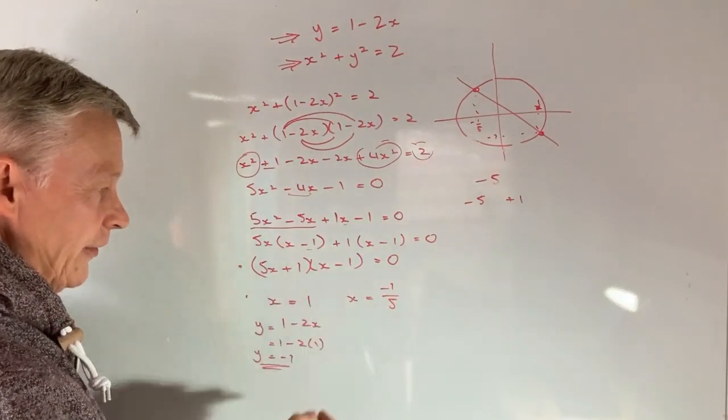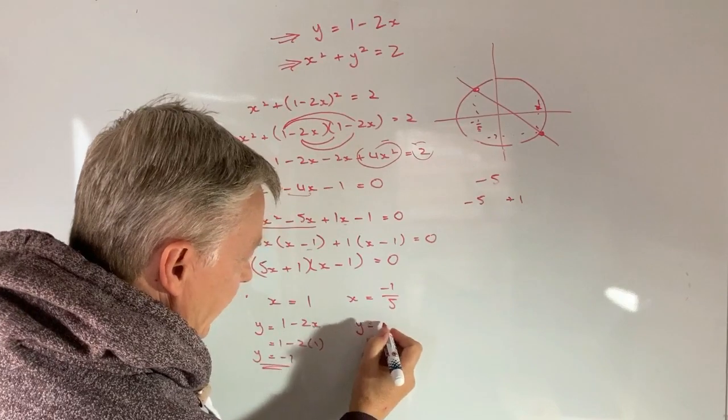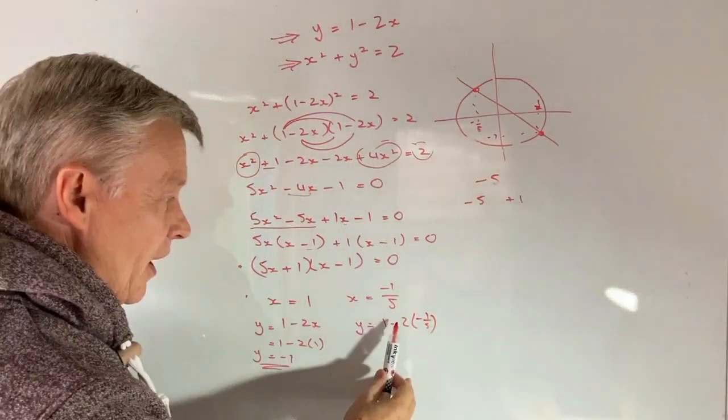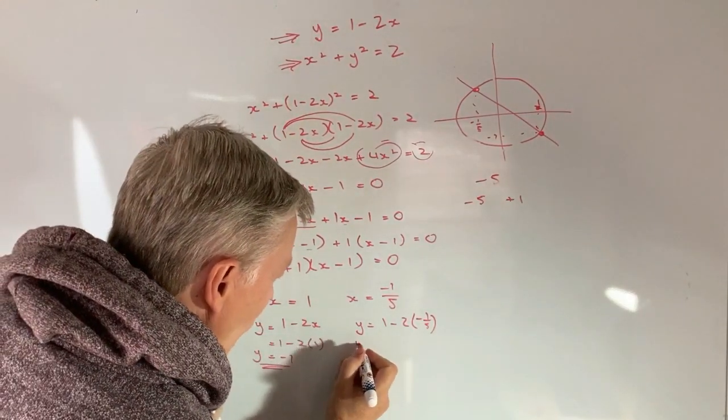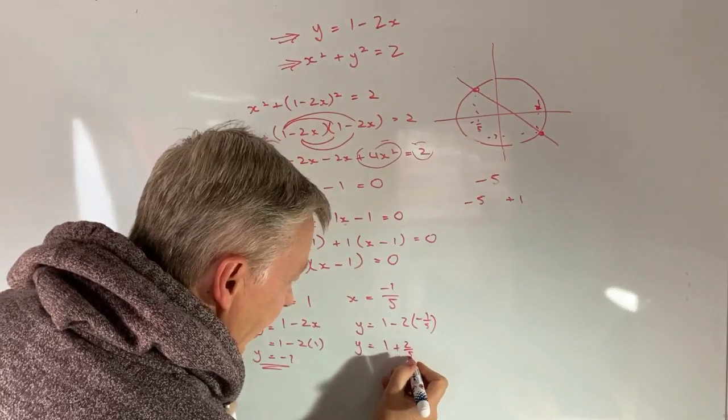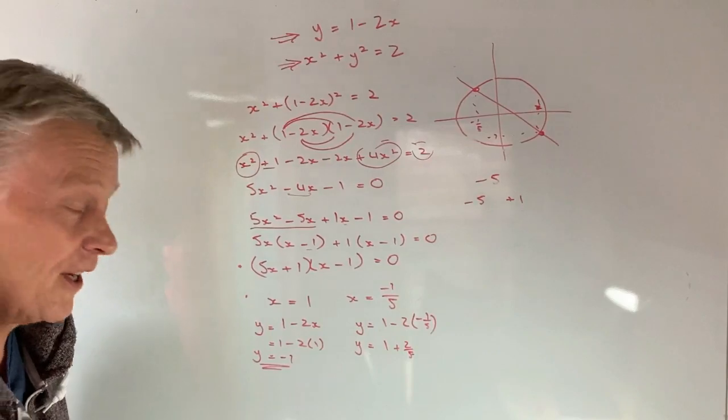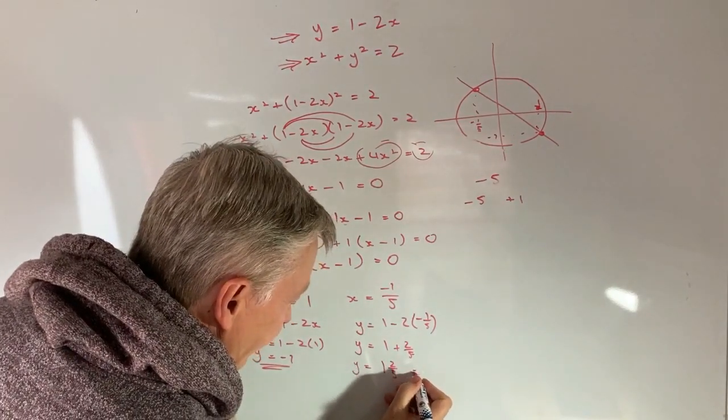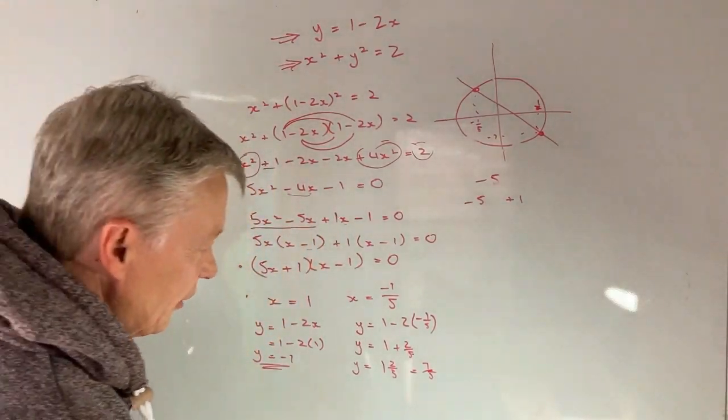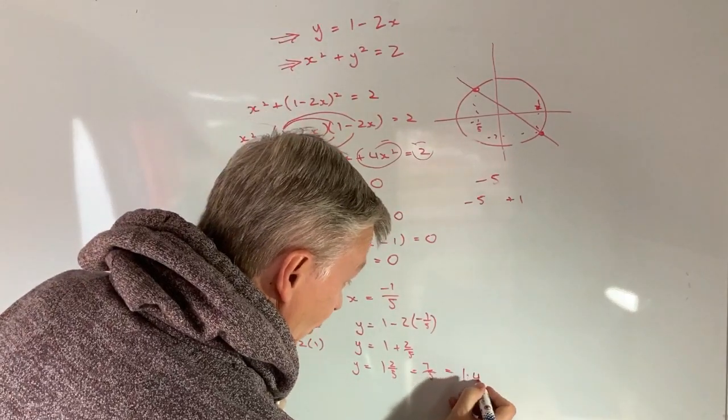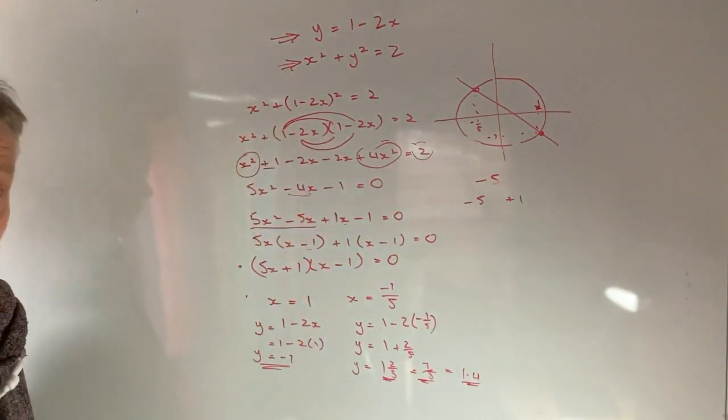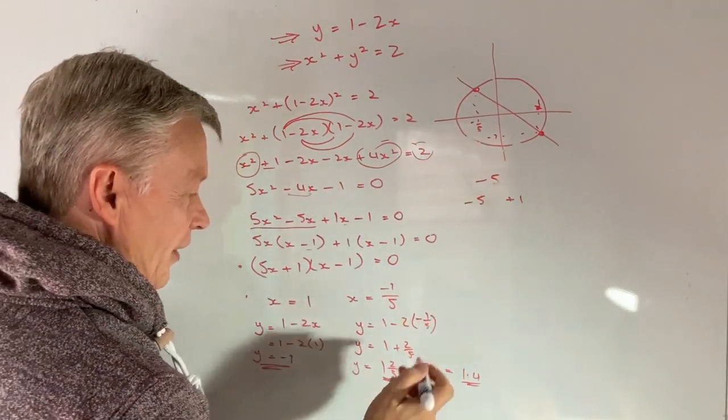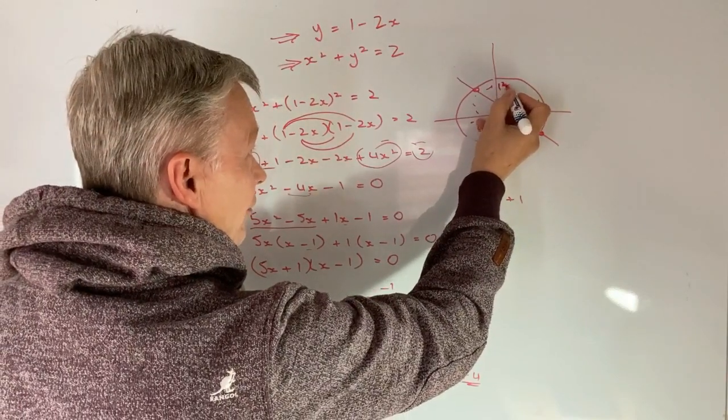And then the final one is going to be this value of x where I can plug that in and I can say, well, y is going to equal 1 minus 2 times minus 1 fifth. A little bit awkward because what we've got is minus 2 times minus. That's going to be a positive. So what I'm going to end up is y equals 1 plus 2 fifths. 2 times a fifth is going to be 2 fifths. So 1 plus 2 fifths is going to be 1 and 2 fifths. Or if you prefer, I can write that as 7 over 5. Or if you prefer a decimal, I could write that as 1.4, couldn't I? So any of those is absolutely fine, doesn't really matter. For the purposes of this, I'm just going to use this over here to say that when x is minus 1 fifths, then y is going to equal to 1 and 2 fifths.